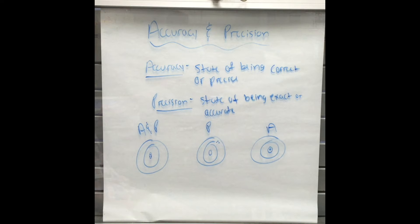A dartboard helps demonstrate this. If a point is on the bullseye it is considered accurate, however if multiple points are close together they are considered precise. When the points are both close together and on the bullseye, they are considered accurate and precise.